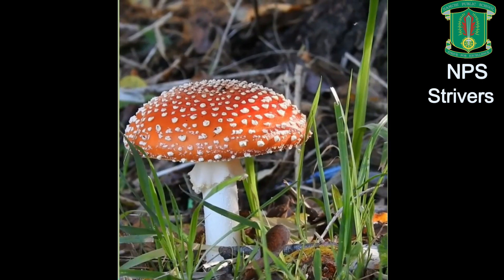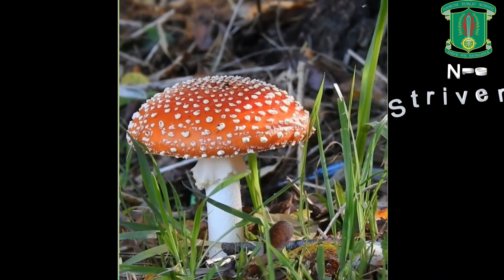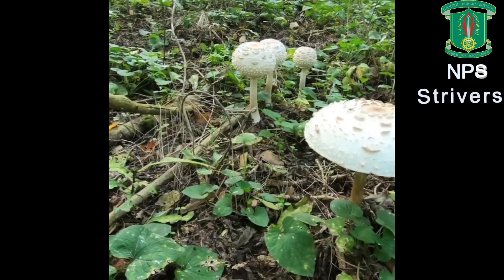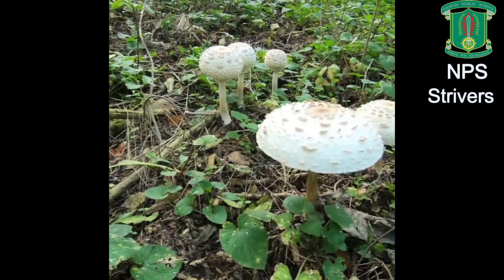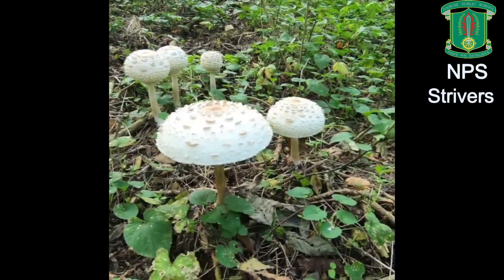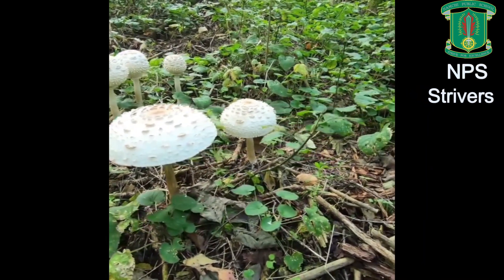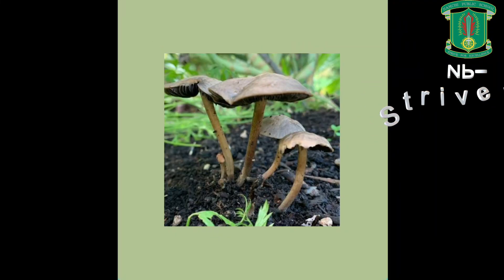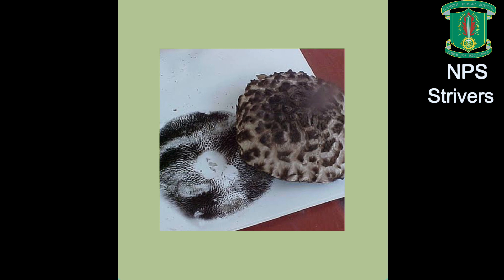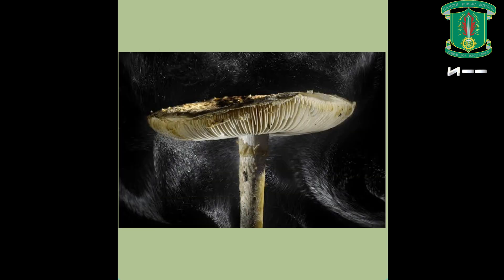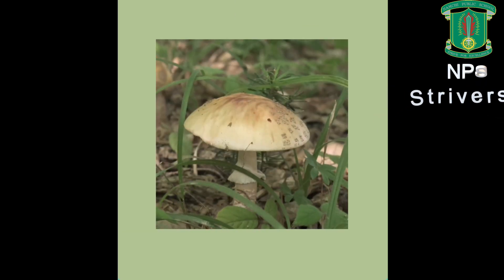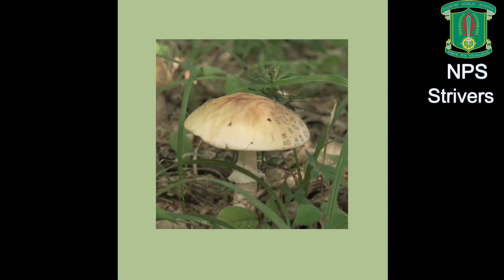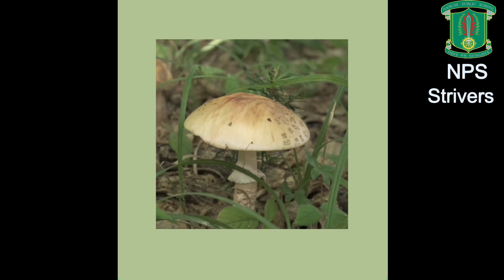Fungi are eukaryotic organisms, meaning they have a defined nucleus and other membrane-bound organelles. They include molds, mushrooms, yeasts, etc. They reproduce through vegetative reproduction, asexual and sexual reproduction, but most species reproduce asexually through spore formation.